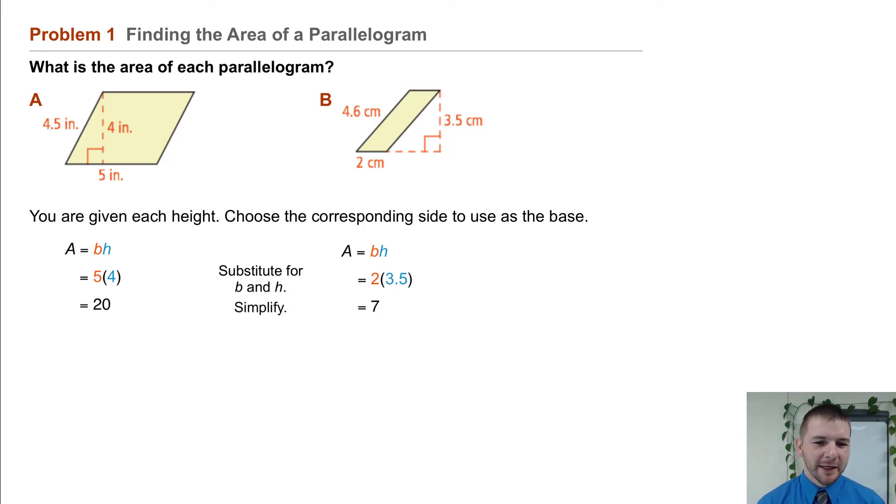So for parallelogram A, that's 20. For parallelogram B, that's 7. So we can state the area is 20 inches squared or the area is 7 centimeters squared.